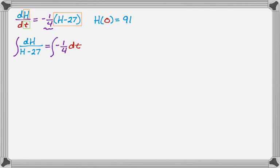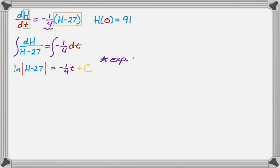On the left-hand side we have dh over (h minus 27). If you've been doing a lot of integrals, you'll recognize that's a natural log. So it's the natural log — don't forget the absolute value — of the absolute value of h minus 27. On the right-hand side it's negative one-fourth dt, which integrates to negative one-fourth times t, and then I put plus c on this side because this is the side with the independent variable. Now, if you're going to exponentiate to solve for h, exponentiate first, then solve — that'll save you from a lot of problems with this particular type.